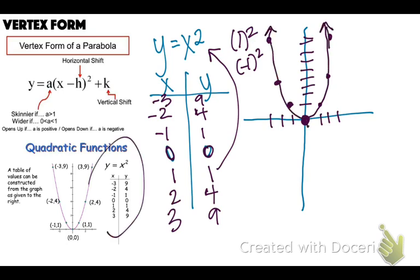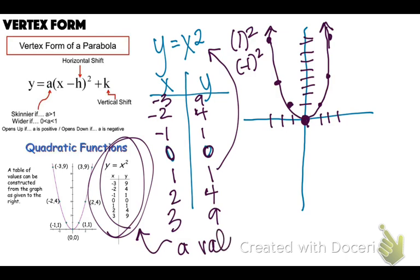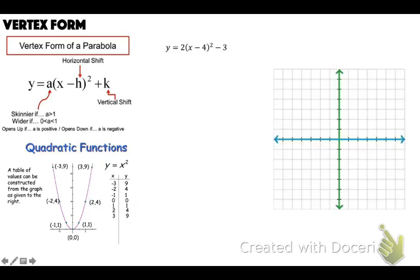These values in the table are going to be very important when we're dealing with our A values. Let's look at this example: y equals 2 times (x minus 4) squared minus 3. First, we want to figure out what our vertex is.